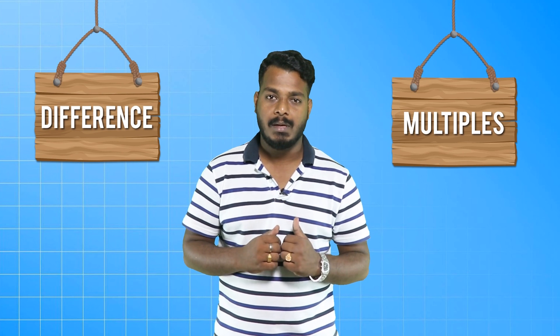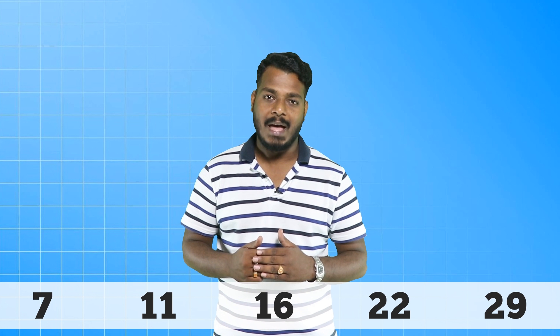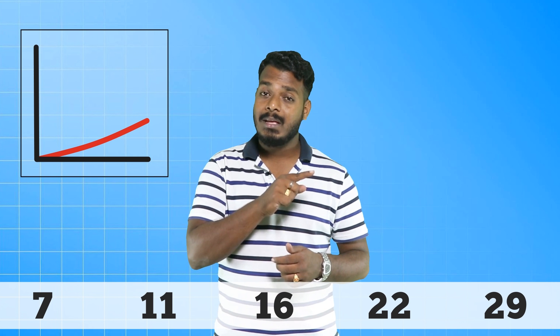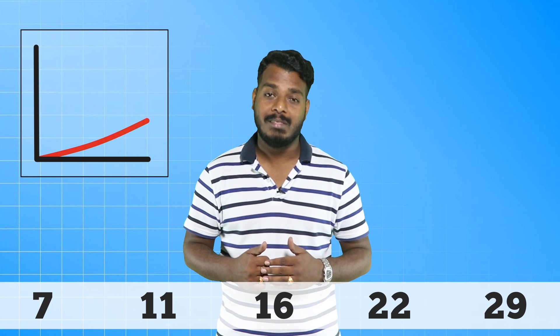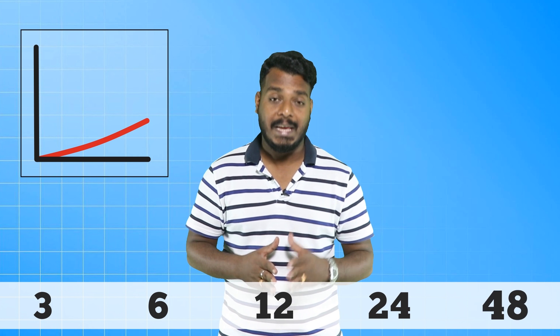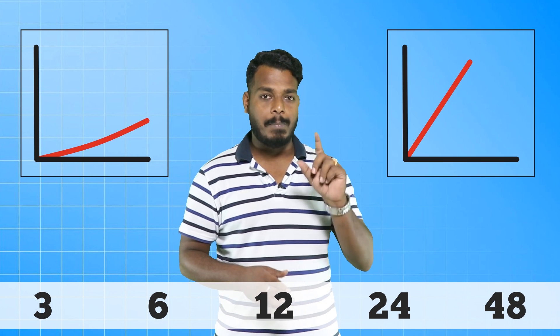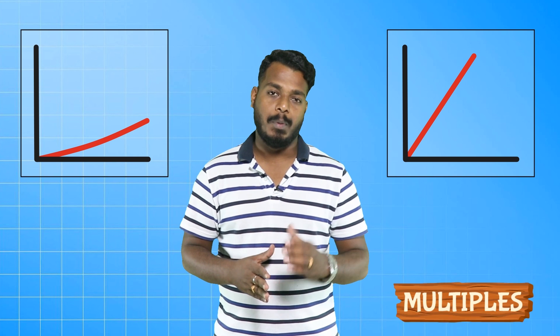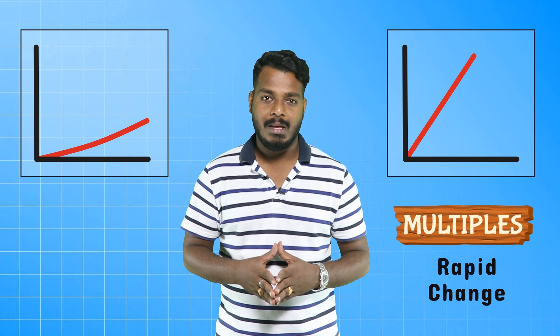You might wonder how to differentiate between a question based on difference and one based on multiples. Look at the two series. In one series there is a gradual increase in every next number — it increases slowly, so it's based on difference. Whereas in the series 3, 6, 12, 24, 48, the series increases rapidly. So whenever there is a rapid increase in a series, it's most probably based on multiples, and when there is a gradual change, it's based on difference.